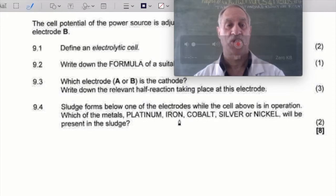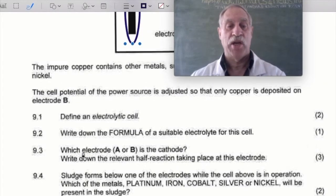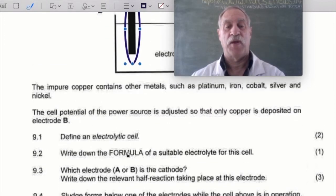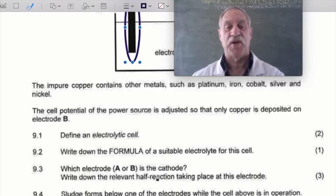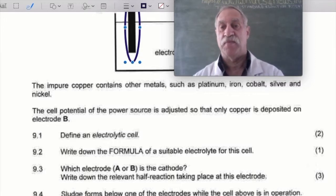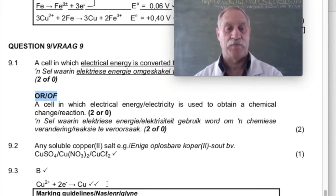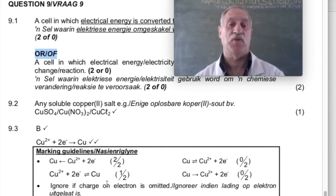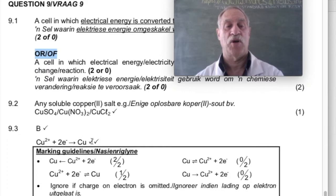Now back to the question: which electrode, A or B, is the cathode? We've got to remember that the cathode is going to be a specific electrode. The memo says: B. So all you've got to remember is B. And it shows Cu²⁺ + 2e⁻ → Cu. Copper ions plus two electrons form copper metal — you've got to memorize that.